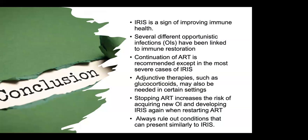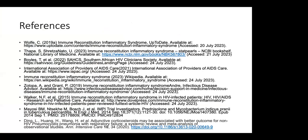Conclusions: IRIS is a sign of improving immune health. Several different opportunistic infections have been linked to immune restoration. Continuation of ARVs is recommended except in the most severe cases of IRIS. Adjunctive therapies such as corticosteroids may also be needed in certain settings. Stopping IRIS treatment increases the risk of acquiring new opportunistic infections and developing IRIS again with restarting ARVs. Always rule out conditions that can mimic IRIS. These are my references, and special thanks to Dr. Yusime Ordaz Fuentes.